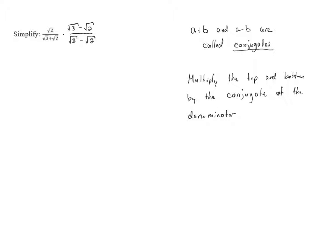So we're going to multiply the top and bottom both by root 3 minus root 2. This might seem random and complicated, but going through the steps we're going to see why this method ends up working and getting rid of the radicals in the denominator.